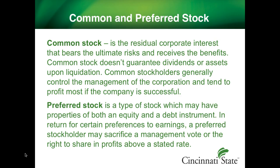Preferred stock is another type of stock — more of a supplementary type. It tries to attract a certain type of investor that requires somewhat of a fixed return. The preferred stock sets the amount of the dividend, usually expressed as a percentage value applied on the par value of the stock. It has preference to earnings, meaning a preferred dividend will be paid before any common stock dividend is paid. Preferred stockholders usually have no voting rights, and the dividend is not guaranteed — it will be paid only if it is declared by the board of directors.